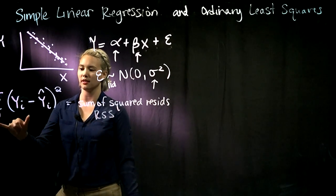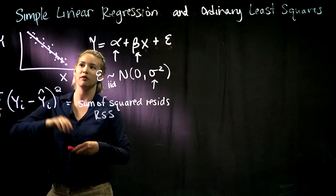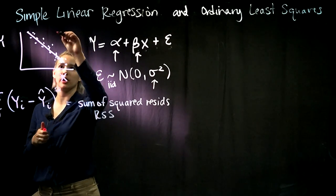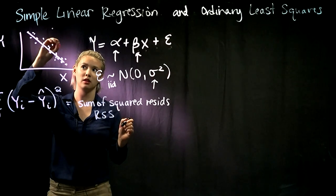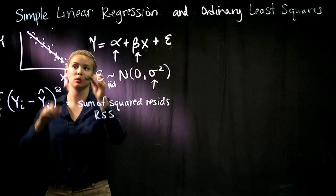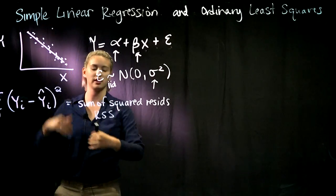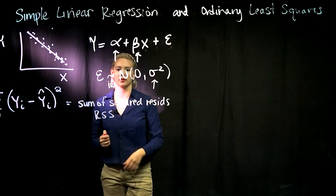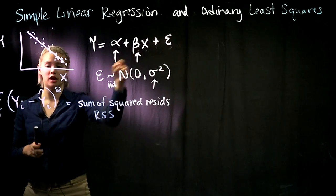By squaring it, we're saying if a point is pretty far away from that line, we're going to penalize it a lot more than if it were closer to the line. So that penalizes points that are further away from that line. This is what we're going to try to use to find alpha and beta.